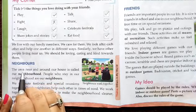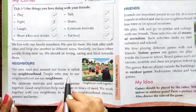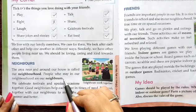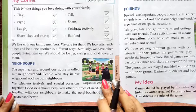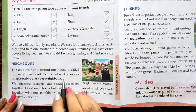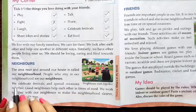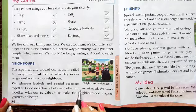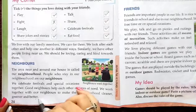The next topic is neighbors. The area near and around our house is called our neighborhood. People who stay in our neighborhood are our neighbors. Many other families also live near our house — these families are our neighbors. We celebrate festivals and special occasions together. Good neighbors help each other in times of need. We work together in our neighborhood to make it cleaner, greener and better.